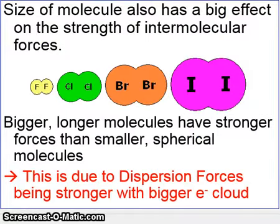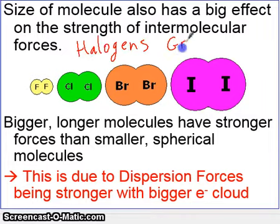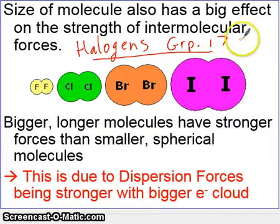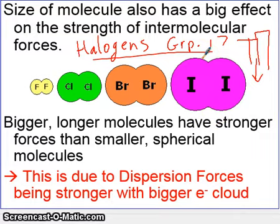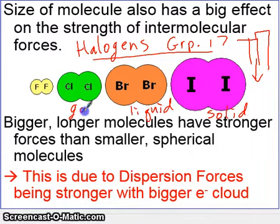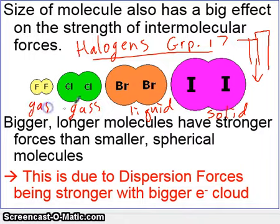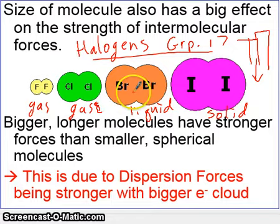The size of molecules also has a big effect on the strength of these forces. Looking at the halogens in group 17 of the periodic table: iodine is the biggest molecule and is actually a solid. Bromine is a little smaller and is a liquid. Chlorine and fluorine are both gases. You can see the progressive increase in boiling point as the molecules get bigger, all the way to iodine, which is a solid.